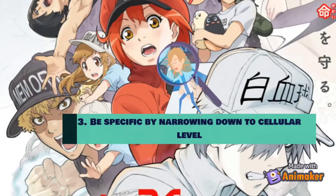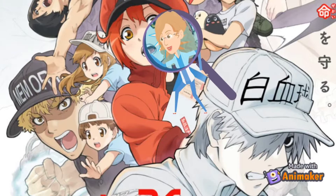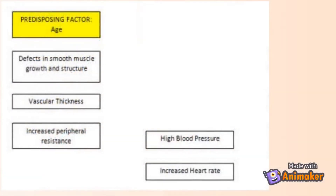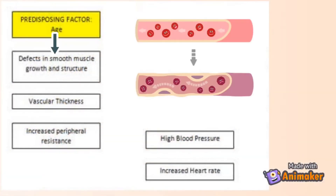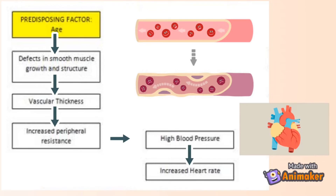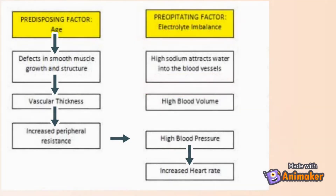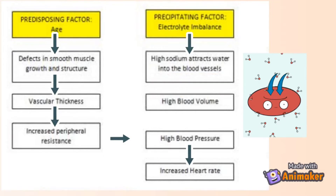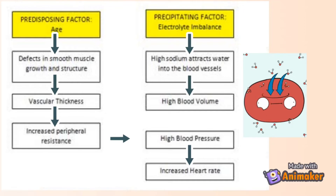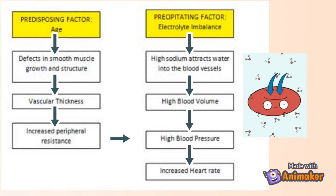Next, be specific by narrowing it down to the cellular level. For example, age causes defects in smooth muscle growth and structure, leading to vascular thickness, resulting in increased peripheral resistance, hence increasing blood pressure and heart rate. Electrolyte imbalance, or high sodium, attracts water into blood vessels, leading to high blood volume, resulting in high blood pressure as well as increased heart rate.